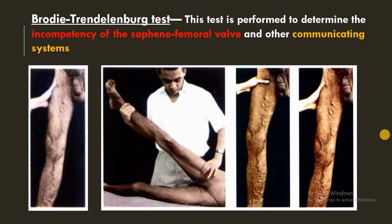In the second method, to test the communicating system, the pressure is not released but is maintained for about one minute. Gradual filling of the veins during this period indicates incompetency of the communicating veins. This concludes the Brodie-Trendelenburg test 1 and 2.